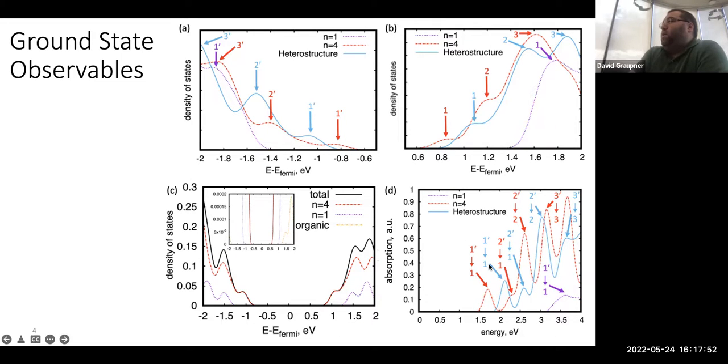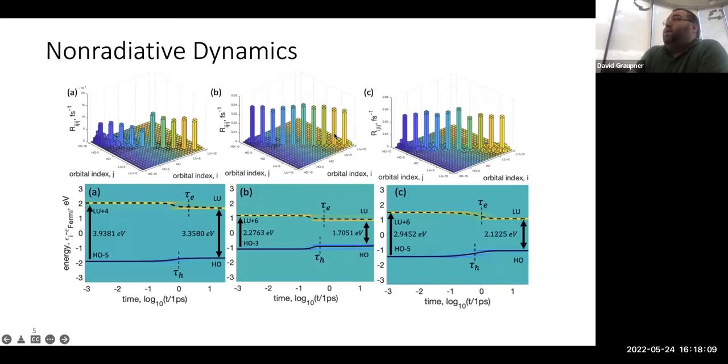Here we see our non-radiative dynamics. The top figures are the Redfield tensor plots, and the higher the power, the faster those two orbitals will interact. We see these double features due to near degeneracy in our model. The bottom figures are a non-radiative relaxation path with an initial excitation. The initial conditions were chosen based on the oscillator strength. They are the highest oscillator strength that did not include the principal band gap degeneracies or near degeneracies.